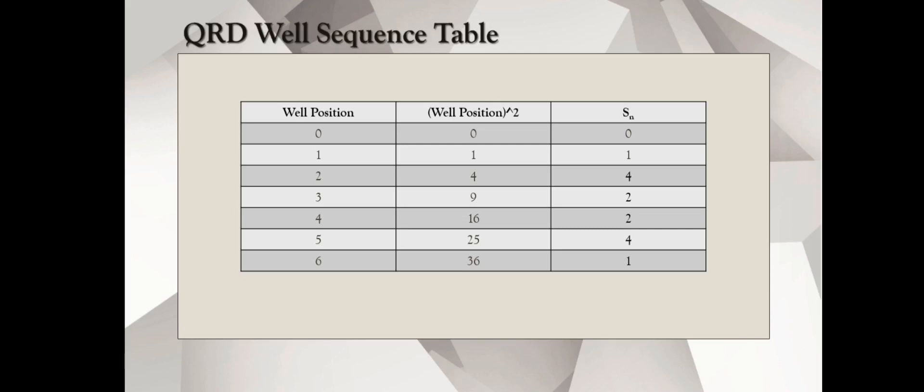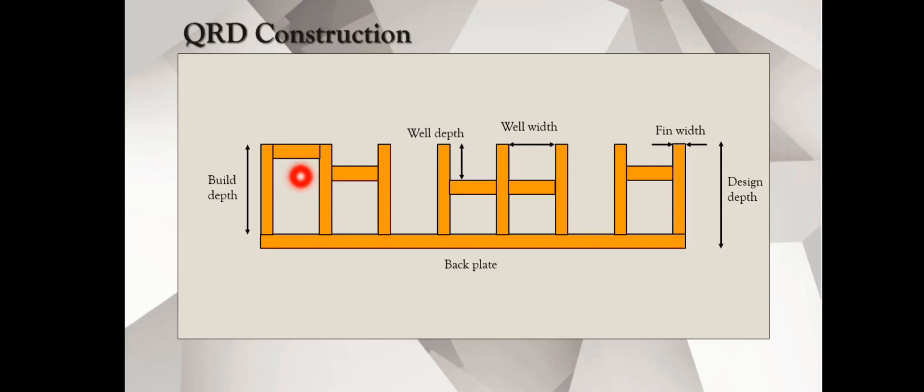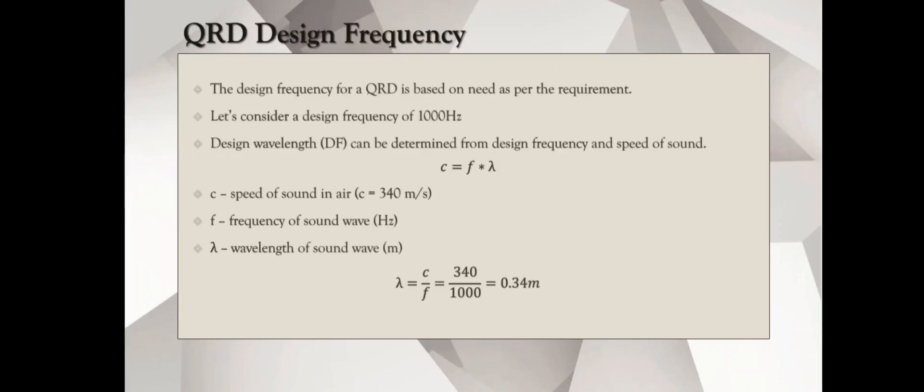We have this well sequence or the relative well depth sequence SN of 0, 1, 4, 2, 2, 4, 1. The design frequency is very important for a QRD. Its frequency response depends on that. Let's consider design frequency of 1000 Hz or 1 kHz. We can determine the design wavelength by using the equation C equals F lambda, where C is the speed of sound in air, F is the frequency, and lambda is the wavelength. For practical purposes and ease of calculation, we're considering speed of sound to be 340 m per second. If you plug in the values, we're going to get lambda to be 0.34 m.